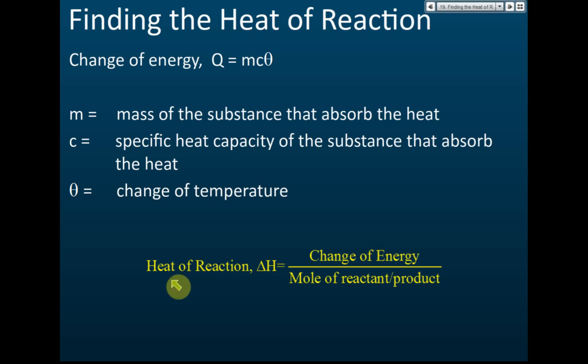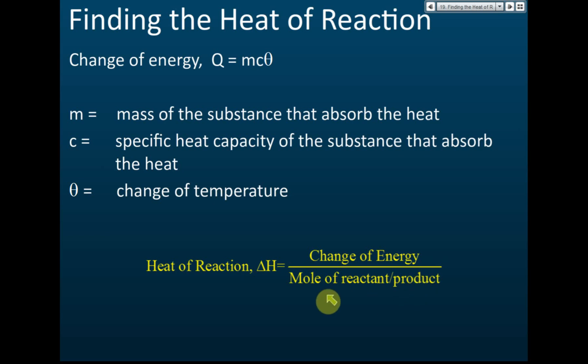Finding the heat of reactions. Heat of reactions can be calculated using this formula: the change of energy divided by the moles of reactants or product. The moles of reactants or product refers to the number of moles of the reference substance in the reaction. For example, for heat of neutralization, we use water as the reference, because heat of neutralization is the heat change when one mole of water is produced.